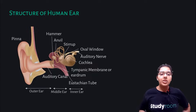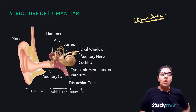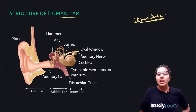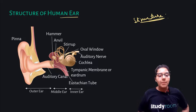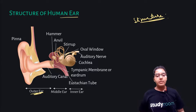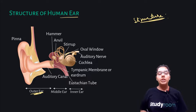Structure of the human ear: this part is called the pinna, this is the hammer, this is the anvil, and this is the stirrup. You should know the parts of the human ear. This part is known as the outer ear. From the auditory canal to this tube is your middle ear. And this is your inner ear.